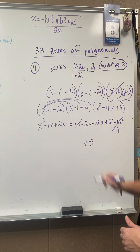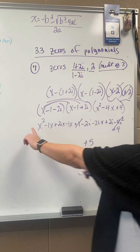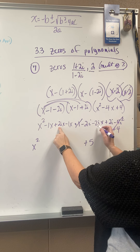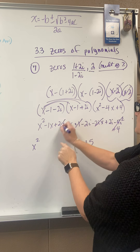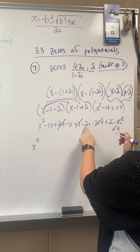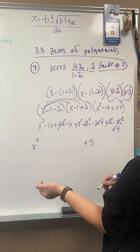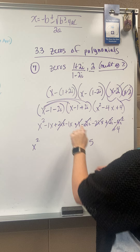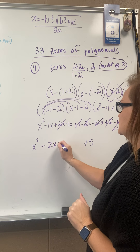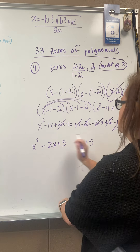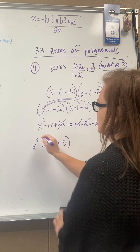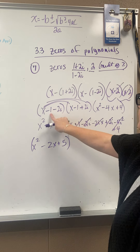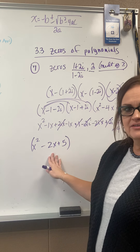So 4 and 1 combines to be 5. In the front I've got x squared. I've got a positive 2ix and a negative 2ix that cancel, a negative 2i and a positive 2i that cancel, and then negative 1x and negative 1x is negative 2x. So this times this all multiplied out nicely to give x squared minus 2x plus 5.